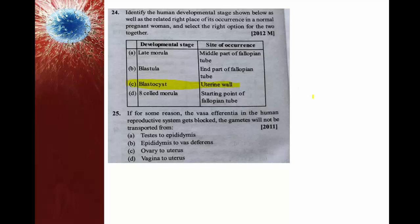If for some reason the vasa efferentia in the human male reproductive system gets blocked, the gametes will not be transported from the testes to the rete testis, since vasa efferentia connect the rete testis to the epididymis.